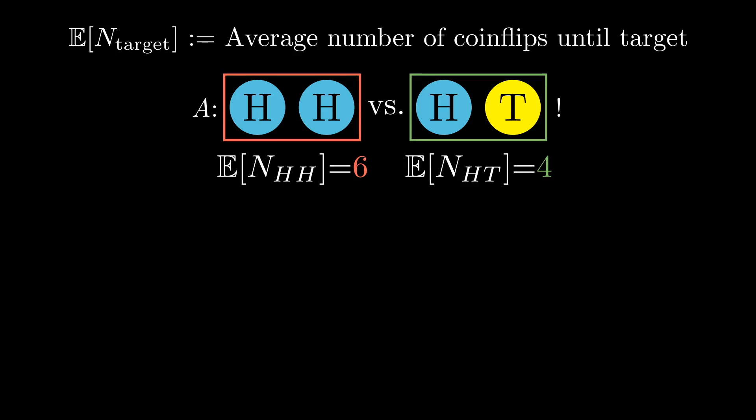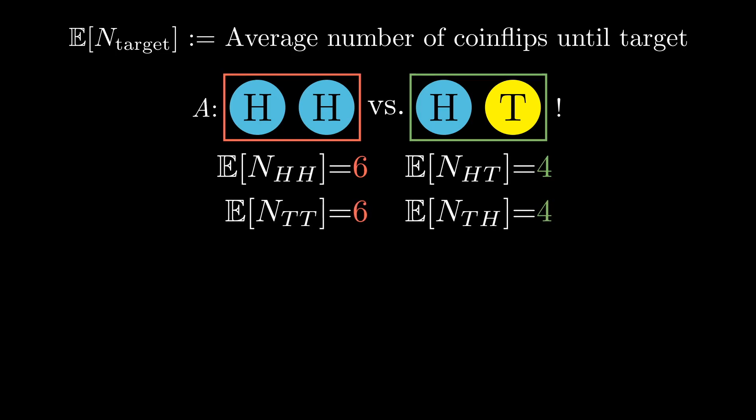By symmetry between heads and tails, the expected value of N_TT is six and the expected value of N_TH is four. The surprising thing is that this symmetry does not work between heads-heads and heads-tails. For some reason, two of a kind really is different from one of each.